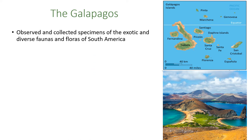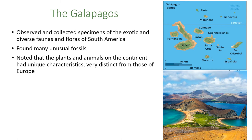One of the places he studied in great detail were the Galapagos Islands, which are off the coast of Ecuador. They are called an archipelago, meaning there are multiple different islands in the same area but not connected. He compared the flora and fauna of the Galapagos to those on the mainland of Ecuador. He found lots of interesting fossils, and found that the plants and animals on the continent had unique characteristics, very distinct from those he had seen in Europe.